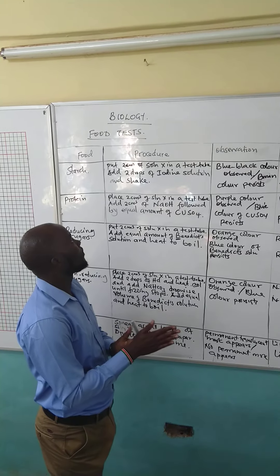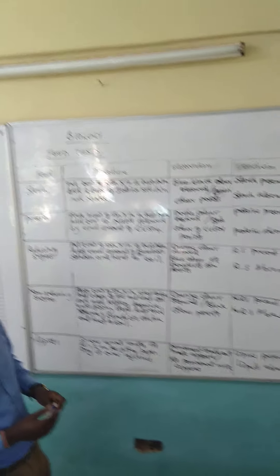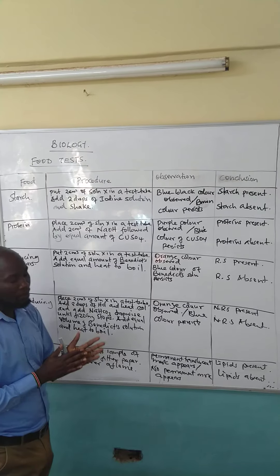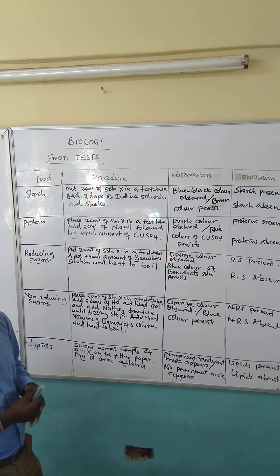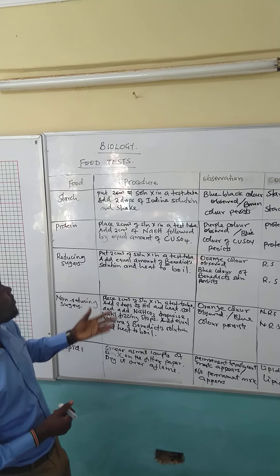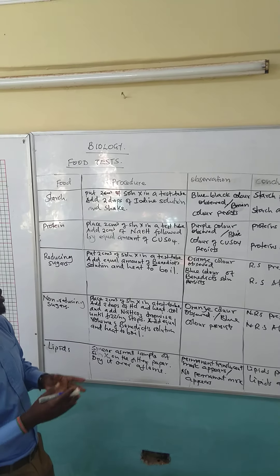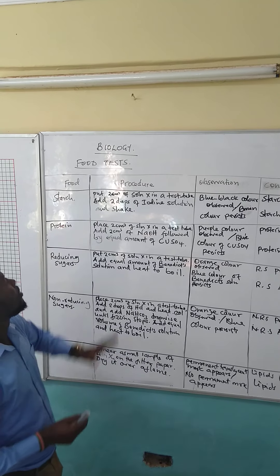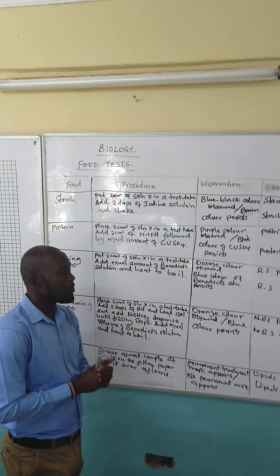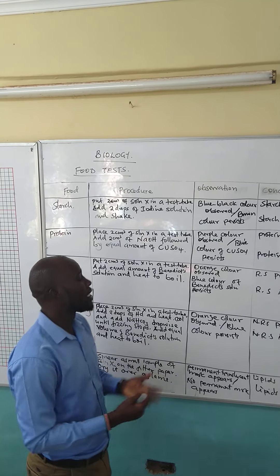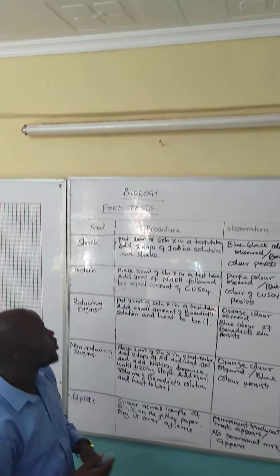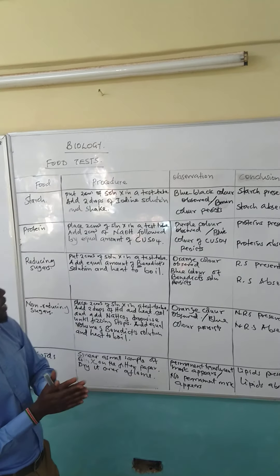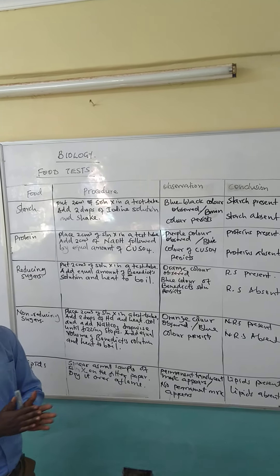Food tests is one of the parts of the biology practical where we do a lot of mistakes. When you are given different samples during the preparation, you can be given some reagents, and we know that each reagent is used for particular food substances to be tested. You can be given samples to mix in certain proportions to obtain solutions, and these solutions could be named as solution X, solution W, Q, or whichever letter is used. When given that, we are always supposed to use the solution that we have been provided with.